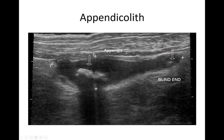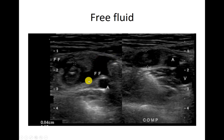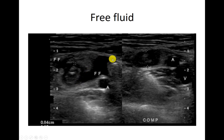Here's an example of some free fluid. This circle right here is the appendix, measured from outside to outside. And this is the free fluid right here. Here's a couple of vessels, but we're concerned that this stuff is not a vessel — this is free fluid. We know that because it comes to little points. Anything pointy is usually free fluid.